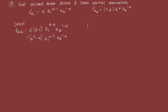For FZ2Z2: the exponent of Z2 is negative alpha, so we get negative alpha times 1 minus alpha, times Z1 raised to alpha, times Z2 raised to negative alpha minus 1. Simplifying, that's negative alpha plus alpha squared, times Z1 raised to alpha, times Z2 raised to negative alpha minus 1. Those are the two direct second-order partial derivatives.